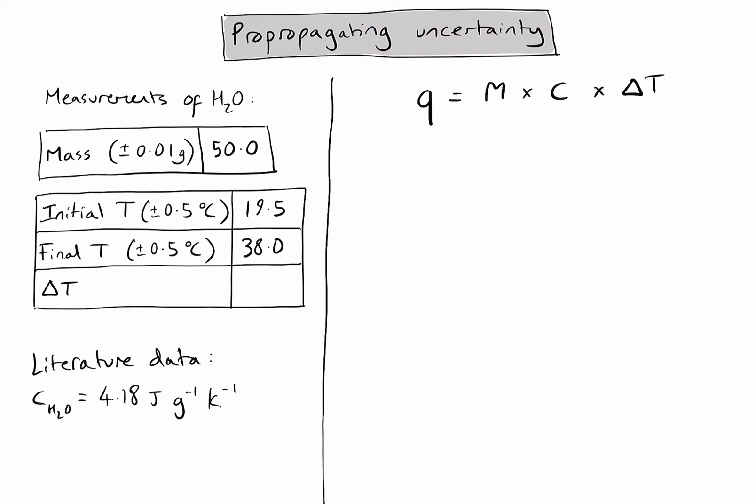For the mass of water, you can see an absolute uncertainty, plus or minus 0.01. And for the two temperature measurements, you'll see it's plus or minus 0.5 degrees. Now, given that my formula on the right hand side requires change in temperature, the first simple calculation I'm going to have to do is to calculate the change in temperature using the final and initial temperature values. So if I do that calculation, 38 subtract 19.5 gives me an answer of 18.5. Let's put that value in our table.